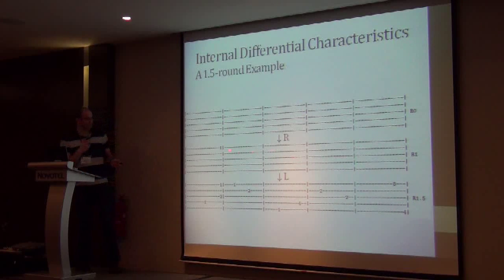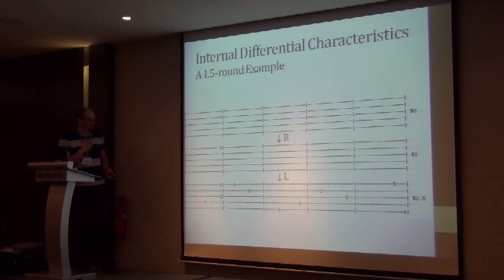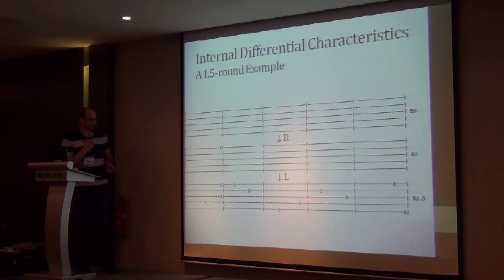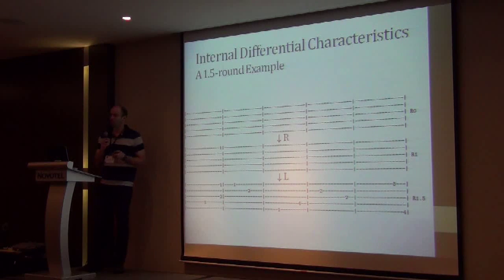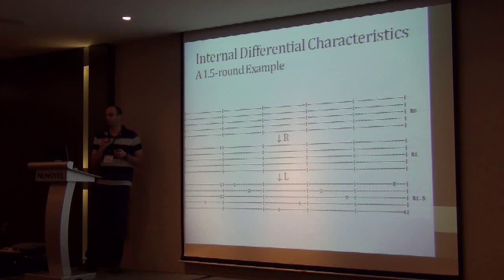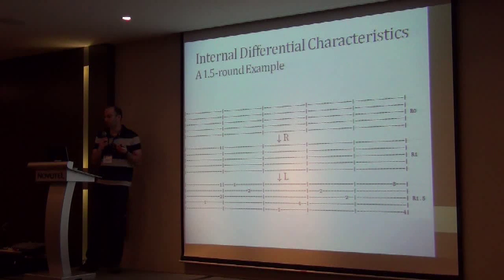This asymmetry then begins to diffuse through the Keccak permutation via the L mapping. The state still retains a large degree of symmetry but its Hamming weight is growing. This simple characteristic has probability one. In the paper we present more complicated characteristics; please refer to the paper for details. We show how to use these in the squeeze attack to attack reduced versions of Keccak.